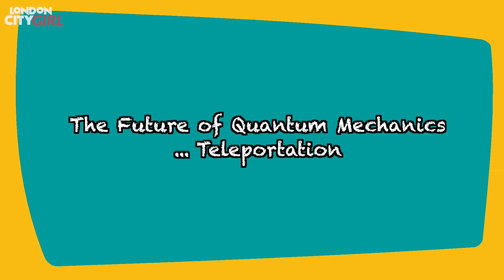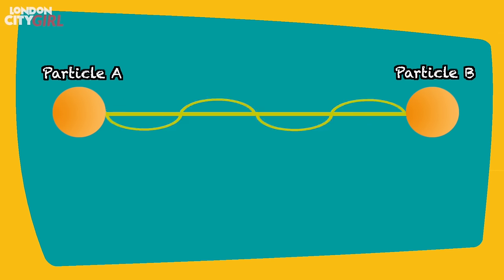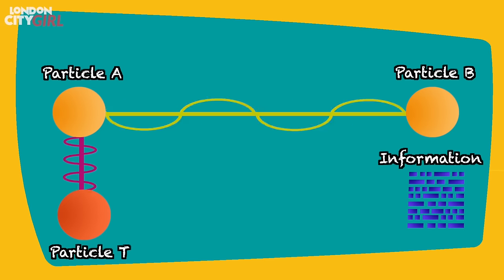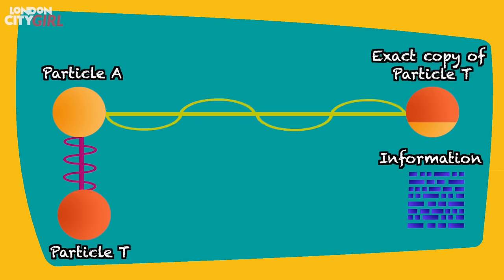The future of quantum mechanics: teleportation. Using quantum entanglement scientists have been able to teleport particles. Two particles are entangled and separated by a large distance. A third particle, particle T, is the particle we want to teleport. Particle T interacts with particle A and we learn how the quantum state of particle T relates to particle A. This information is then sent across to where particle B is kept. As particle A and B are entangled, this information will also reveal how the quantum state of particle T relates to particle B. Particle B is then manipulated to replicate the quantum state of particle T, becoming an exact copy, while the original particle T is destroyed as its information was extracted and sent across.